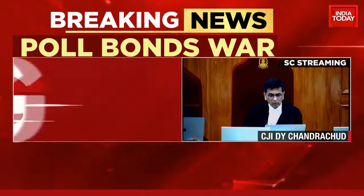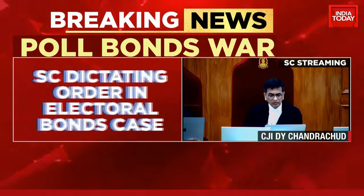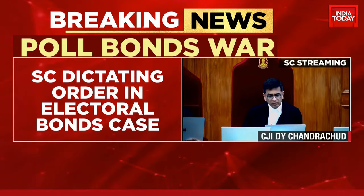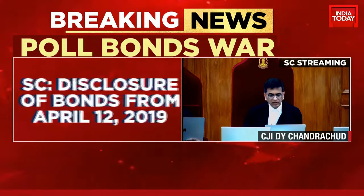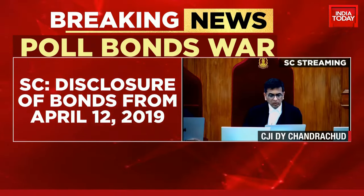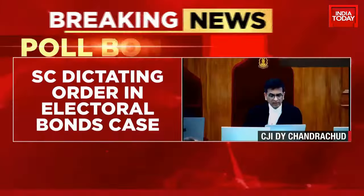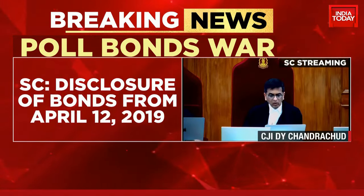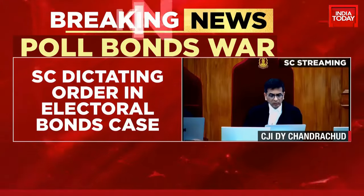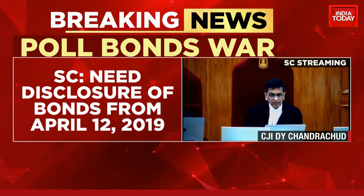Such details, the court indicated, shall include the date of purchase of each electoral bond, the name of the purchaser of the bond, and the denomination of the electoral bond purchased. In the second part of the operative direction, in subparagraph C, SBI was required to submit the details of political parties which have received contributions through electoral bonds, since the interim order dated 12 April 2019, till date to ECI. SBI was required to disclose details of each electoral bond encashed by political parties, inclusive of the date of encashment and the denomination of the electoral bond.